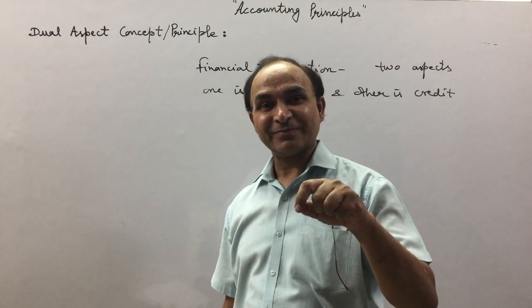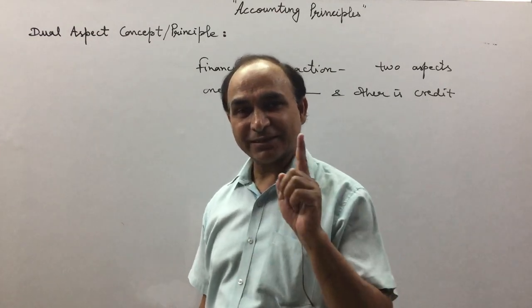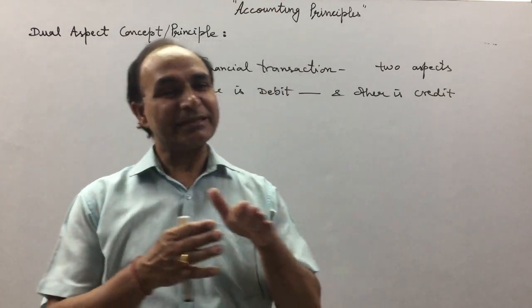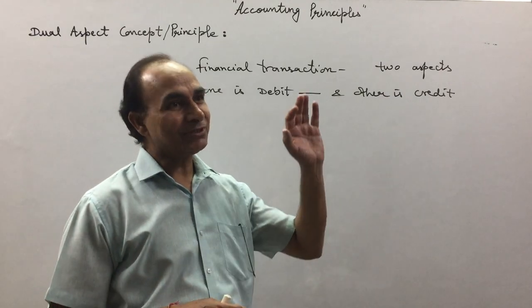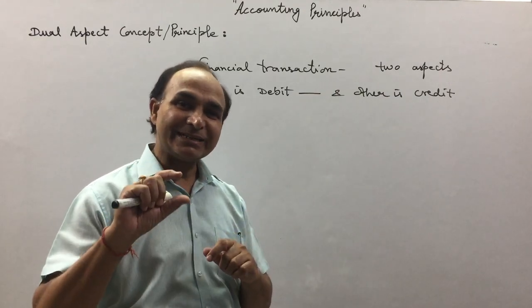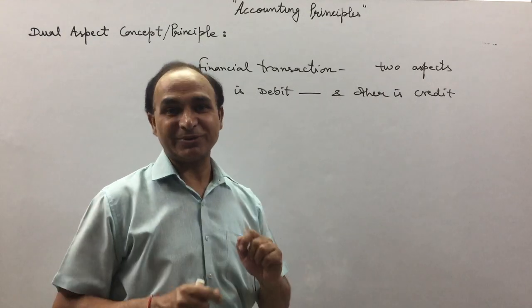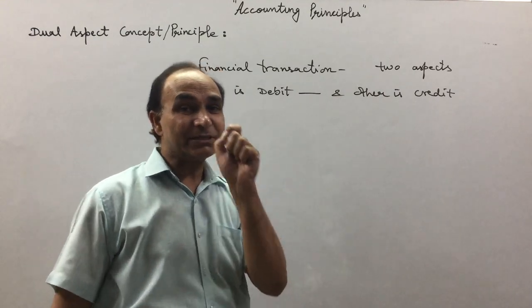...amount, either in one account or more accounts. One account may be debited while multiple accounts are credited, or multiple accounts debited while one is credited, but always of equal amount. That is the dual aspect concept.